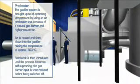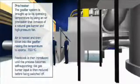From cold, the gasifier system needs to be brought up to its operating temperature. This is accomplished using an air preheater that consists of a natural gas burner and high-pressure fan. Air is heated by the gas burner and blown into the base of the gasifier, raising its temperature to approximately 700 degrees Celsius.